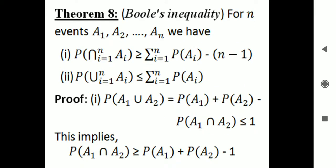The next Theorem 8 is Boole's inequality. For n events A1, A2, etc., An, we have probability of intersection i equals 1 to n of Ai greater than or equal to summation i equals 1 to n of probability of Ai minus (n minus 1). We will prove this by induction method, assuming true for n equals 1, then for n equals m, and proving for n equals m plus 1.